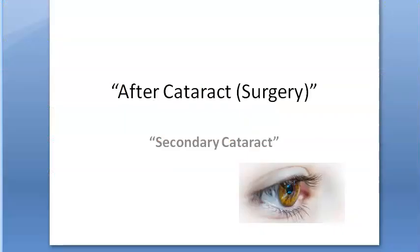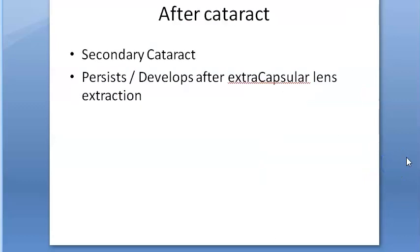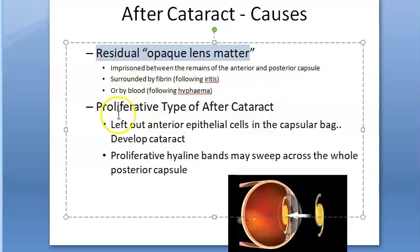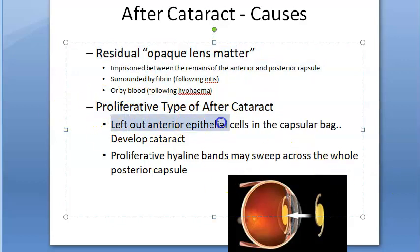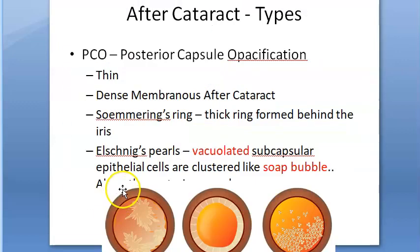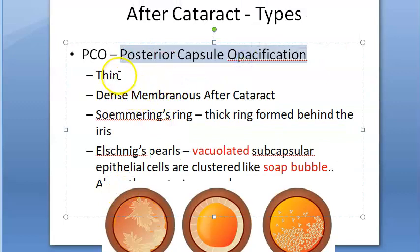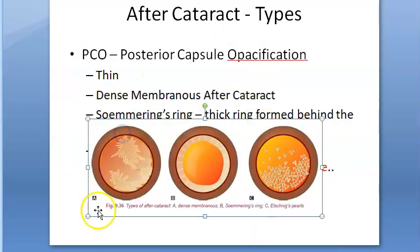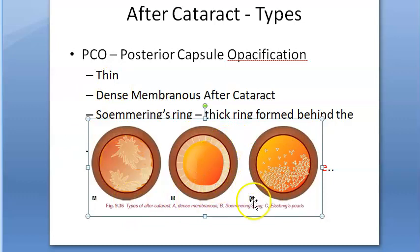After-cataract (secondary cataract) occurs after cataract surgery due to residual opaque lens matter or proliferative type where residual anterior epithelial cells develop and proliferative hyaline bands sweep across the posterior capsule — hence also called posterior capsule opacification (PCO). Three types: dense membranous, Soemmering's ring (no treatment if central part is clear), and Elschnig pearls.